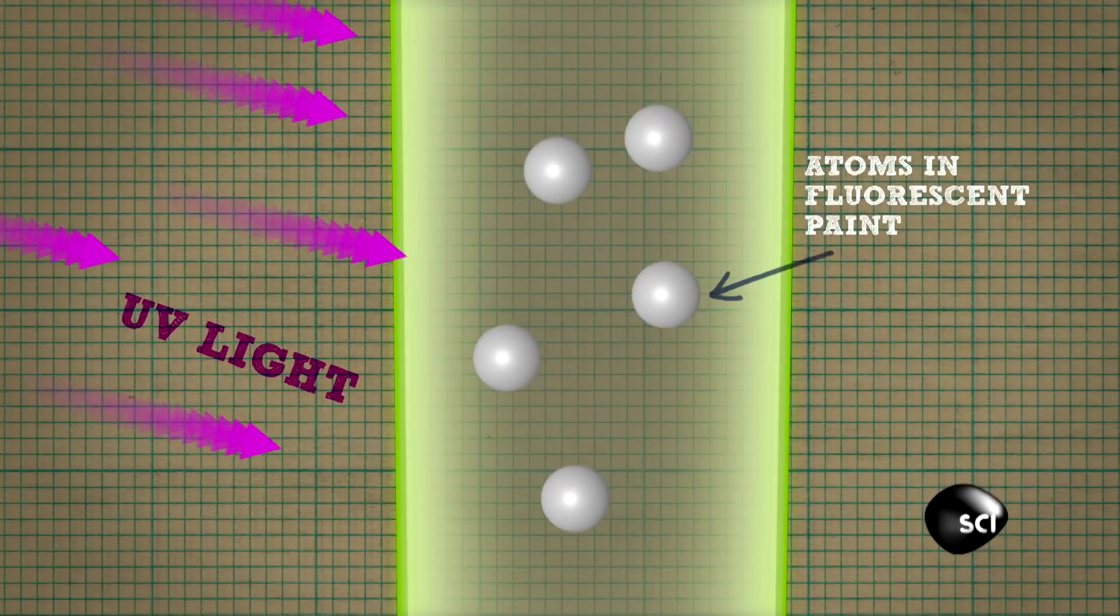The tubes are full of fluorescent paint, and the atoms in this paint are able to absorb the UV light that's being shone upon them.